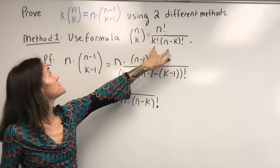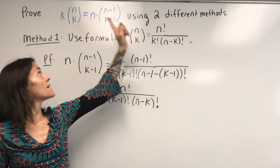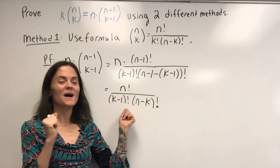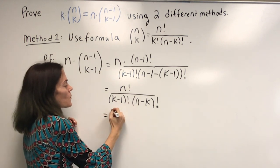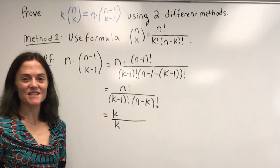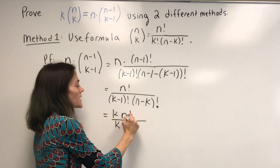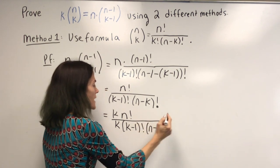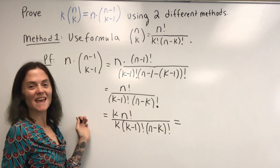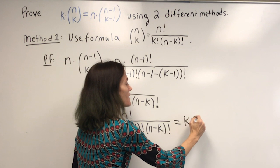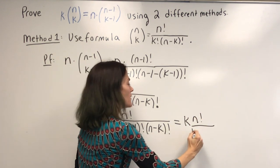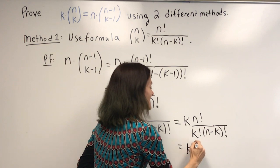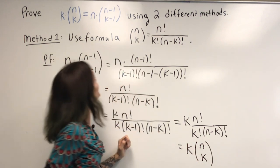Now you can use this as your guide, because I need k times n choose k, and I'm almost there. I can multiply by 1 in the form of k over k — I have not changed my fraction or the equality. Then k times k minus 1 factorial is k factorial, so I have k factorial over k factorial times n minus k factorial, which is exactly k times n choose k.